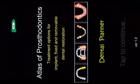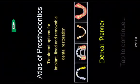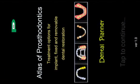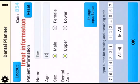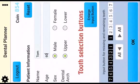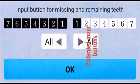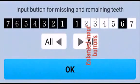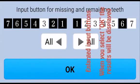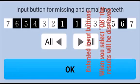Atlas of Prosthodontics for Dental Planner shows the treatment options when you input the position of the missing teeth. When each tooth selection button is pressed, it will turn black to indicate a missing area. When you select OK, the results will be displayed.